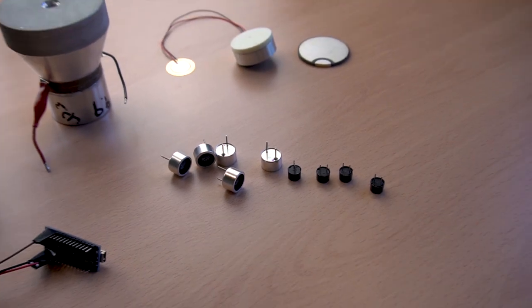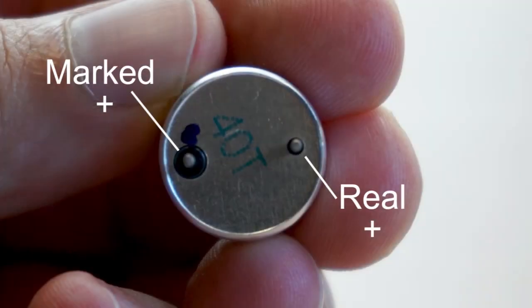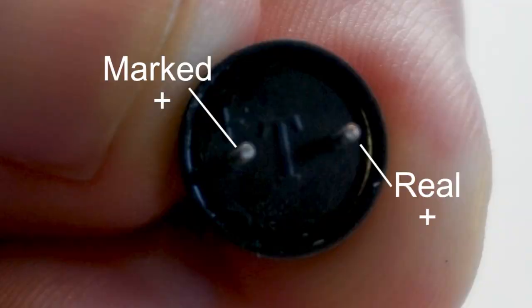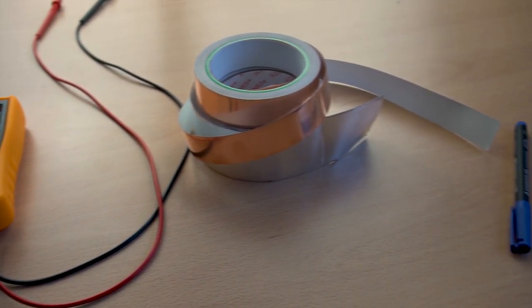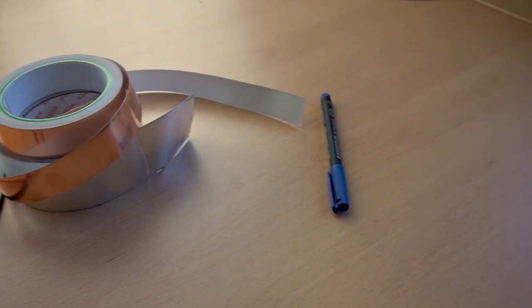Piezoelectric transducers are used in different projects, however quite often the marked polarity is not right. Here, I will show you how to mark the polarity with a simple multimeter and copper tape.